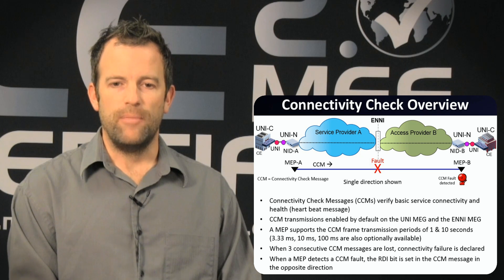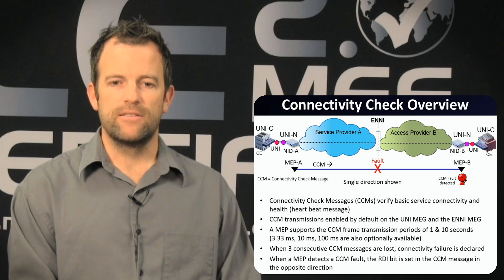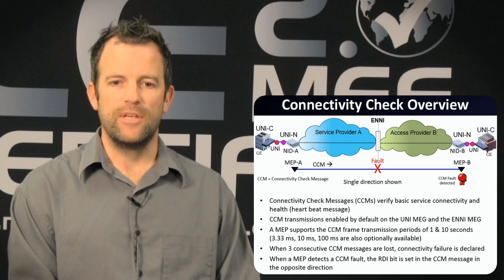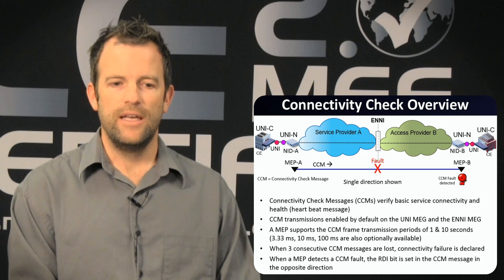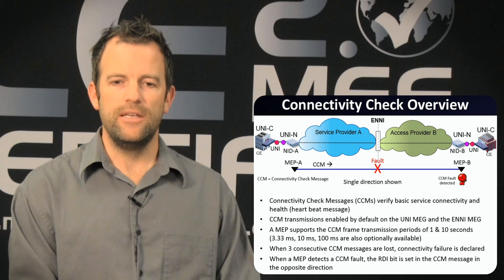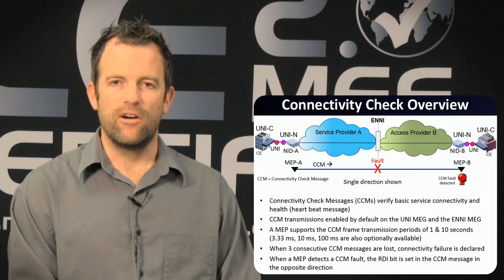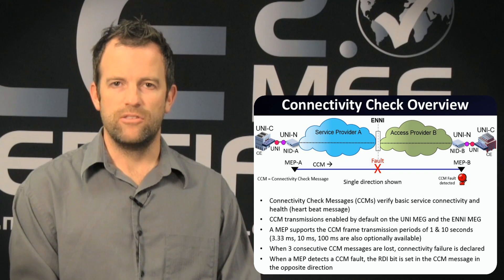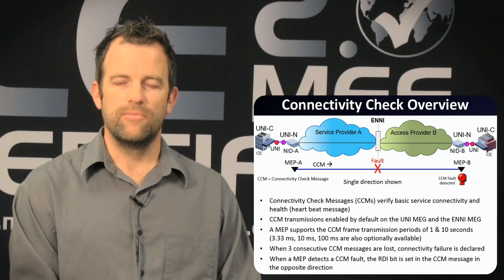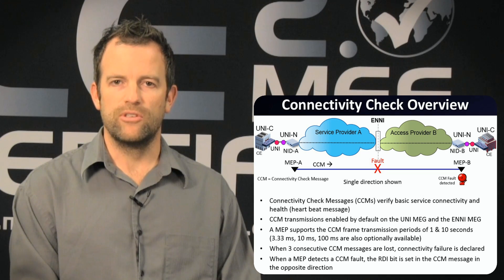When MEP B detects three consecutive CCMs being lost, the fault condition is declared and the MEP at B sets the RDI bit in its CCM messages and sends those messages in the opposing direction.